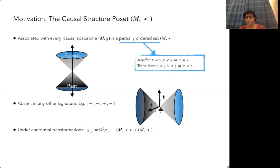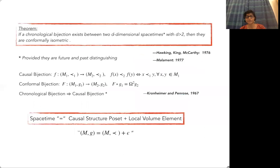All of us know that under a conformal transformation, light cones don't change. The causal structure remains the same. So an important question: suppose you have two causal structure POSETs from two different spacetimes and they're the same. Are the spacetimes related by a conformal transformation? The answer is affirmative. This is the theorem due to Hawking, King, McCarthy, Malament, supplemented by Kronheimer and Penrose.